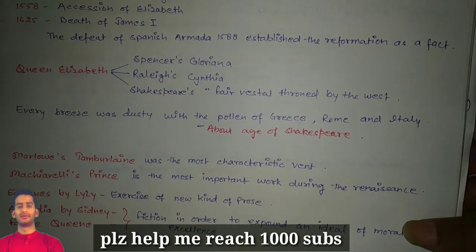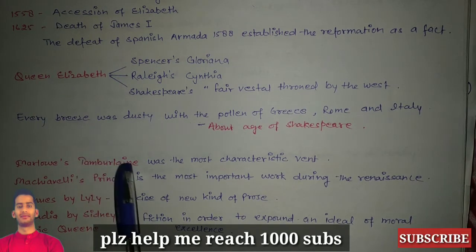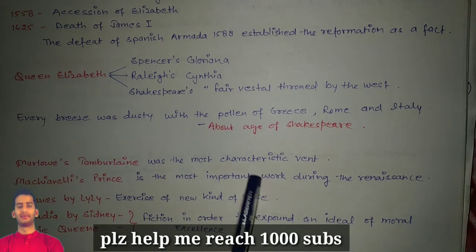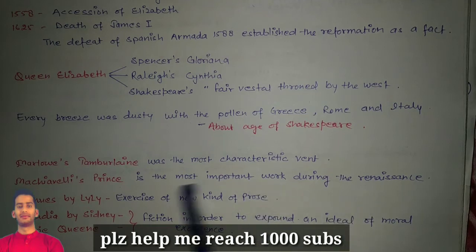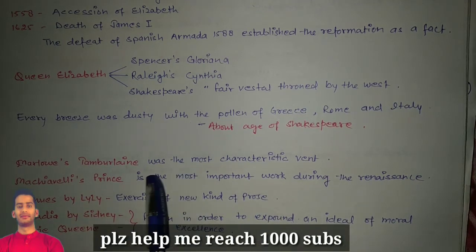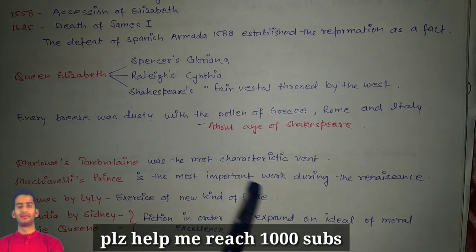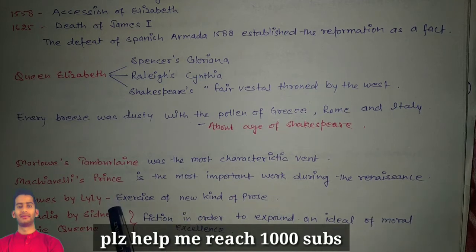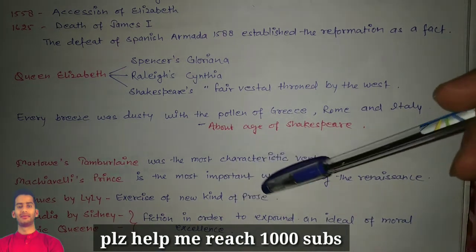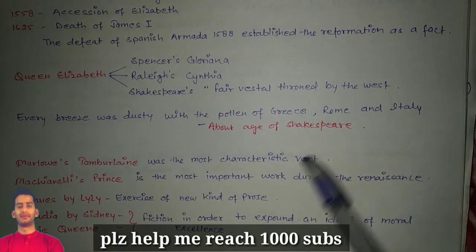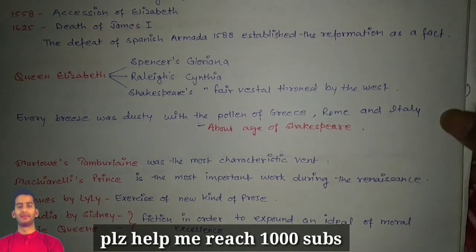Some important works to remember from this period: Marlowe's Tamburlaine was the most characteristic event, and Machiavelli's The Prince is the most important work during the Renaissance period. Euphues by Lyly brought the term Euphuism into English literature and was an exercise in a new kind of prose. Arcadia by Sidney and The Faerie Queene used fiction to expound an ideal of moral excellence, promoting virtue and reformation.